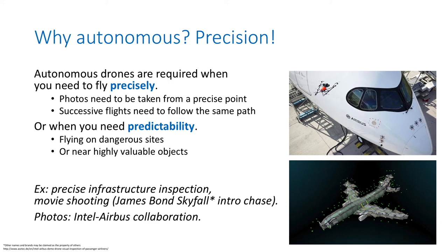The second reason to focus on autonomous drones is if you need precision and predictability. Autonomous drones can provide that when they are well developed. For example, if you need to take photos from a specific position with a specific angle, and to do that predictably over several flights — that's useful for infrastructure inspection or movie shooting, such as James Bond's Skyfall.